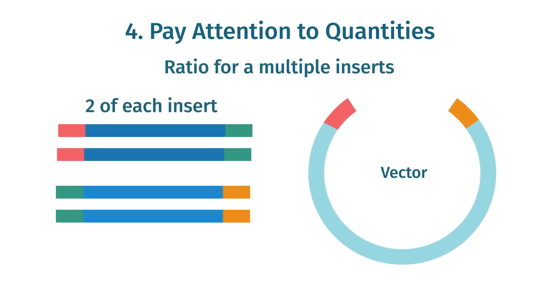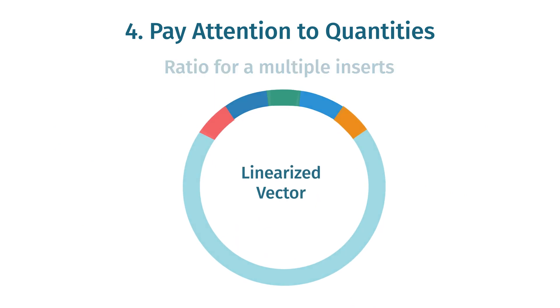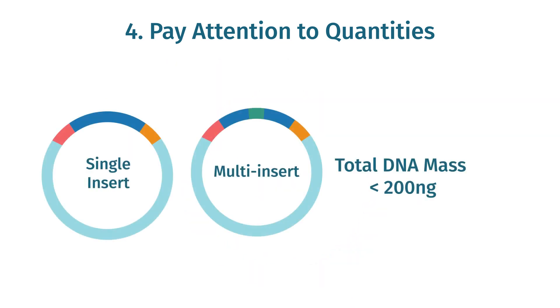For multi-insert reactions, use twice as much of each insert relative to the vector. The total mass of DNA in your infusion reaction should not exceed 200 nanograms.